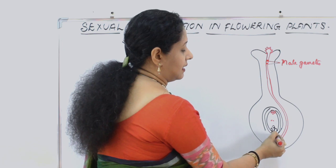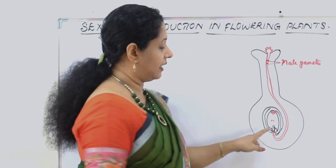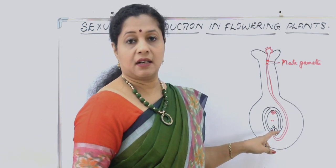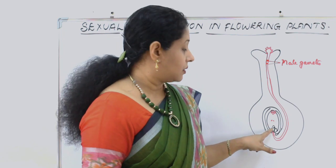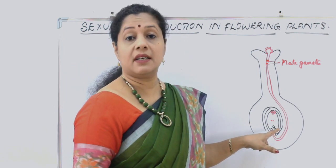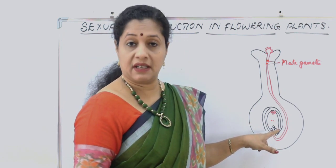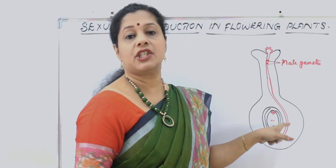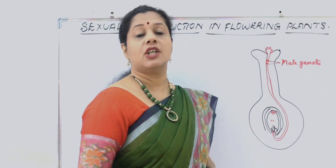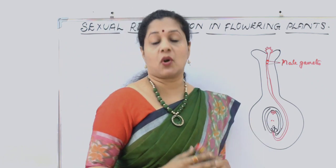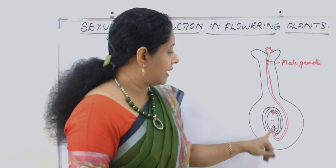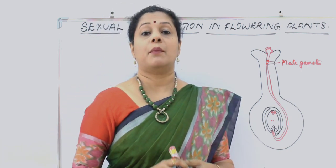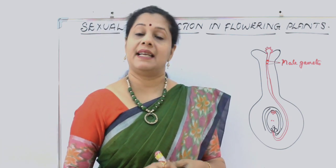The male gametes enter into the egg cell through the synergids. We learned that synergids have a filiform apparatus to guide the pollen tube. The male gametes are released into the egg. All these processes, until the pollen tube enters the ovule, are together called pollen-pistil interaction.